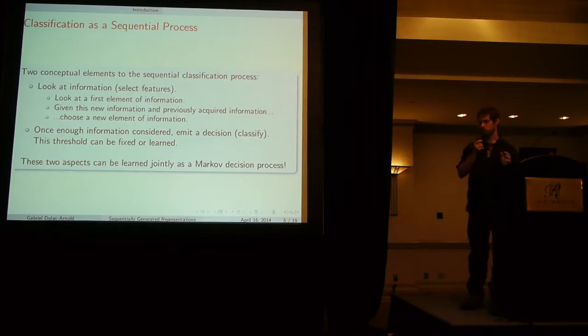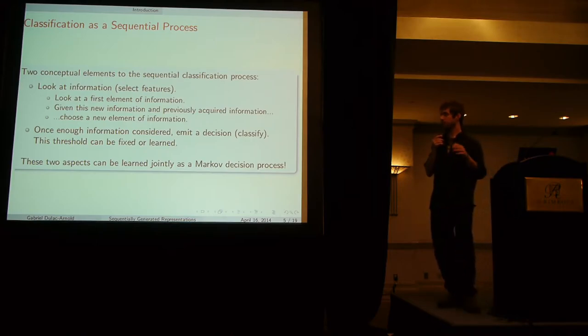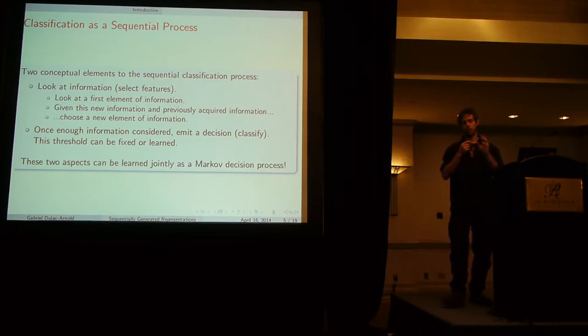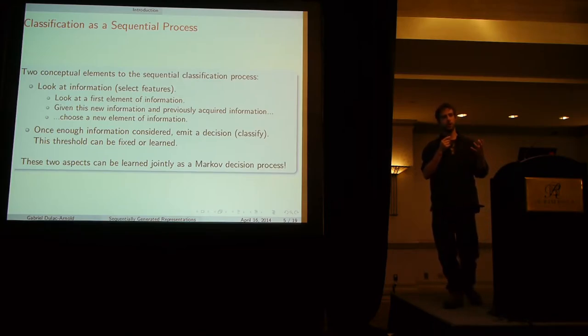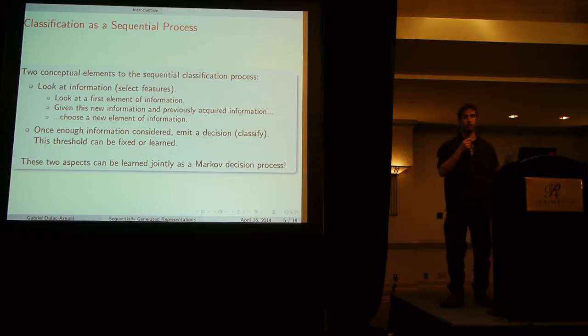There's kind of two conceptual steps for this model. The first part is looking at information. You're iteratively starting off with no information, acquiring some of the information, leveraging that information to acquire more information, and you can do this as many times as necessary. In our case we have a fixed budget so that means you only do it a few times.